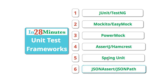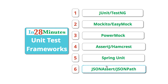The last frameworks we want to talk about are JSONAssert and JSONPath. Whenever we talk about REST APIs, the input and output are always JSON. When you get a JSON output, you want to check for specific things — whether it contains this data in this format, whether it contains this data with this value. All that is possible through JSONAssert and JSONPath frameworks.